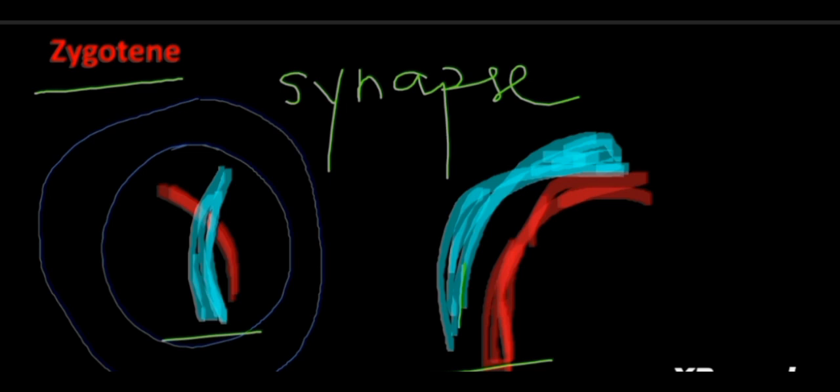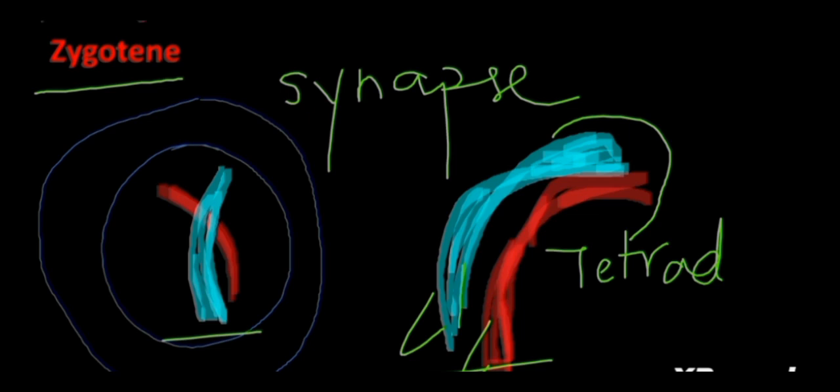So after these homologous chromosomes paired up and form synapse, these are called as tetrad or bivalent. Tetrad or bivalent have four sister chromatids which are wrapped around each other.